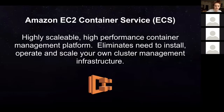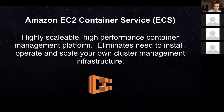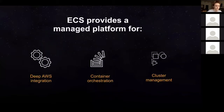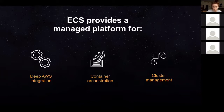ECS is Amazon's container service — a highly scalable, high-performance container management platform. It eliminates the need to install, operate, and scale your own cluster management infrastructure. You get easy-to-run container-based workloads in AWS, deep integration with other AWS services, the open-sourced ECS agent, and communication with your services via the API. The whole goal is a managed platform for the moving pieces that come with running microservices.